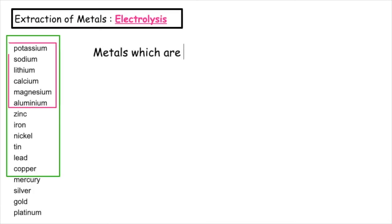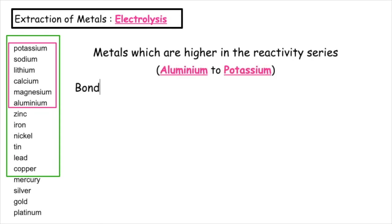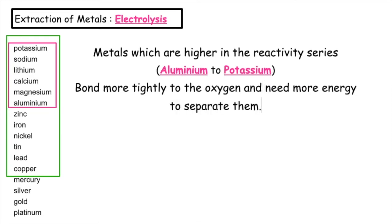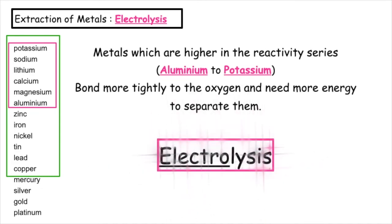Metals which are higher in the reactivity series, between aluminium and potassium, bond more tightly to the oxygen and therefore need more energy to separate them. The technique we use to separate the metal from the metal oxide is known as electrolysis. Electro means using electricity, and lysis means to split up.